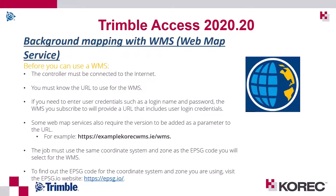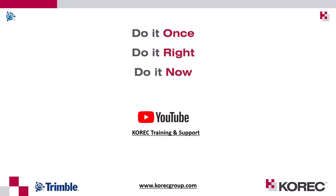Some map services also require a parameter added to the URL. For example, a correct WMS URL might look like: example-correct-wms.ie/wms. You might just require a plain URL address. The job must use the same coordinate system and zone as selected for the WMS. If you need the code for a coordinate system, go to epsg.io and find the code associated with your coordinate system.